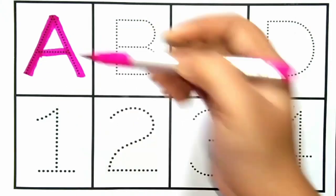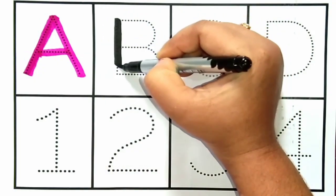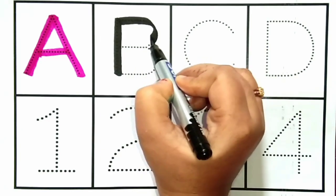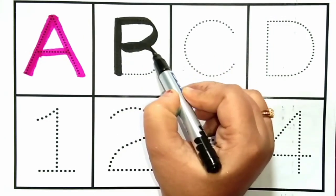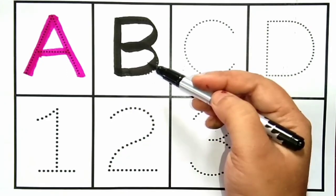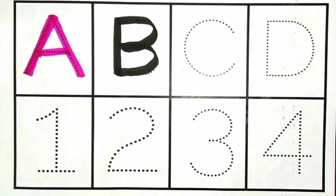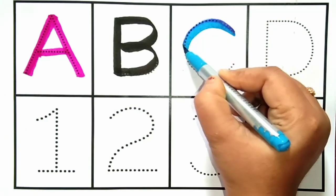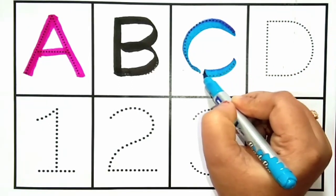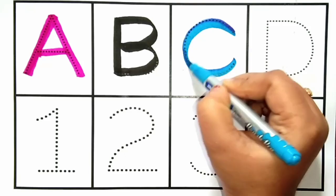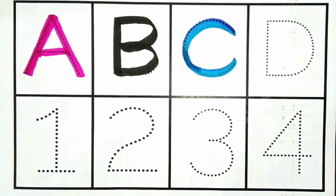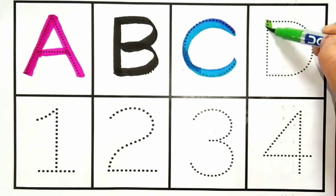A for Ant. B for Butterfly. B for Butterfly. C for Cat. C for Cat.